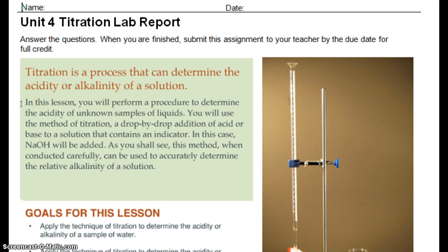And what's the other thing it could be? An acid, a base, or neutral. If the pH is exactly 7, then it is neutral. In this lesson, you'll perform a procedure to determine the acidity of unknown samples of liquids. You'll use the method of titration, a drop-by-drop addition of acid or base to a solution that contains an indicator. In this case, sodium hydroxide will be added. As you shall see, this method, when conducted carefully, can be used to accurately determine the alkalinity of a solution. And again, alkalinity is describing a base.